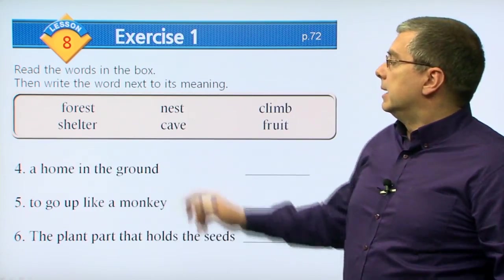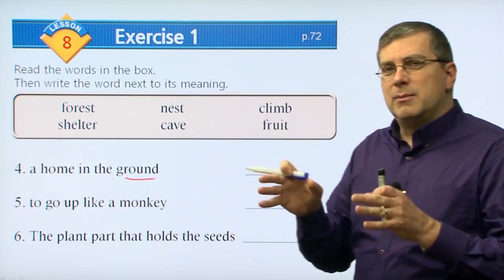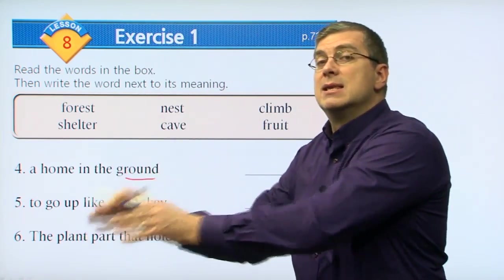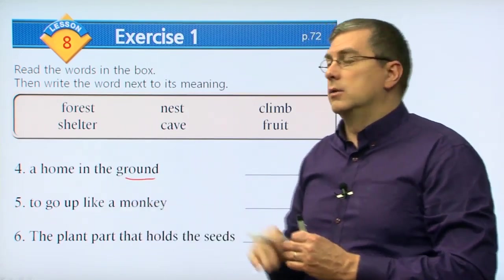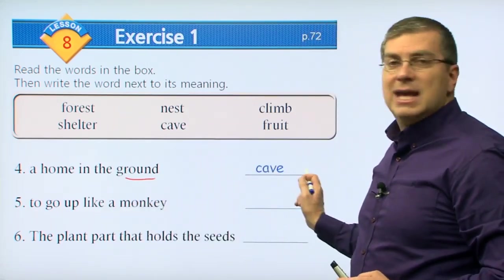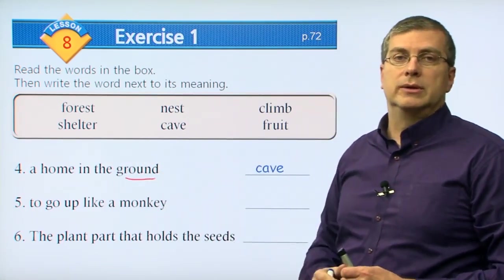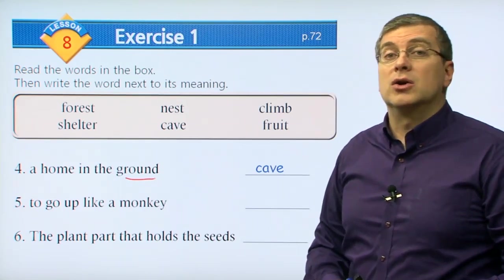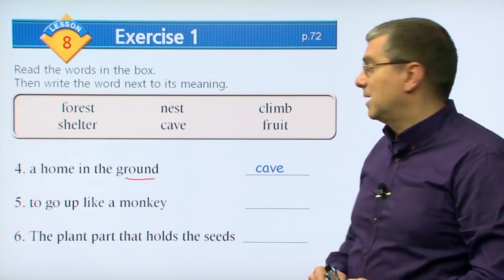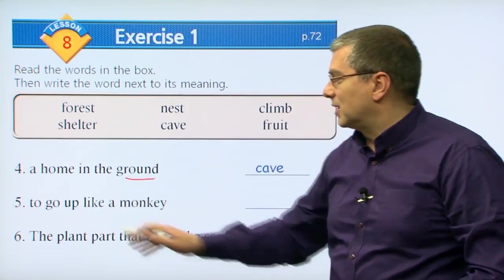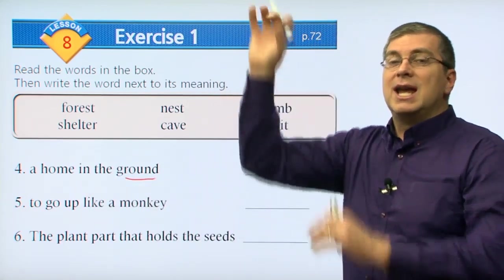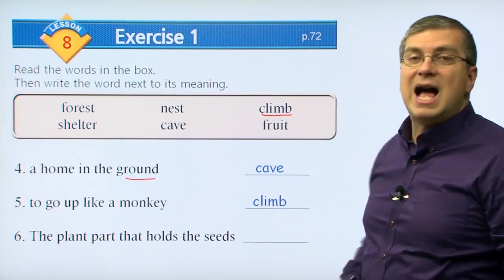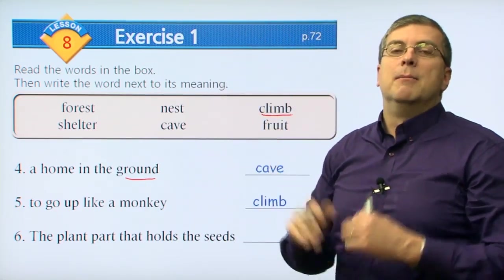Let's move on to the next three. Number four: a home in the ground. Some animals will dig it, or sometimes it's just there and an animal moves in - it's usually underground or in the ground. What type of shelter is it? We call it a cave. A cave is a home in the ground. Bears and wild dogs and other large animals will live in a cave. A long, long time ago, human beings lived in caves. Number five: to go up like a monkey. If you want to go up the tree like a monkey, the verb is climb. Monkeys climb trees very well.